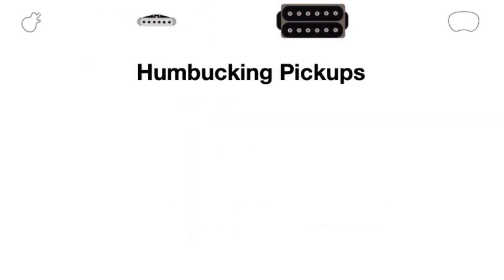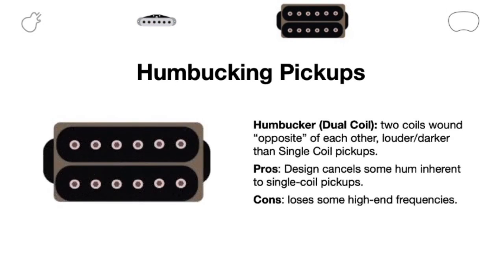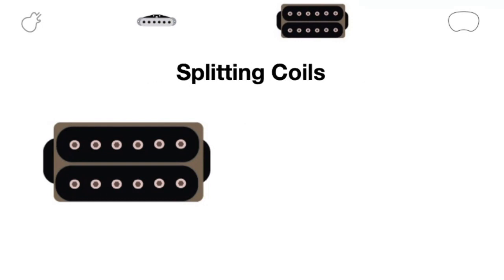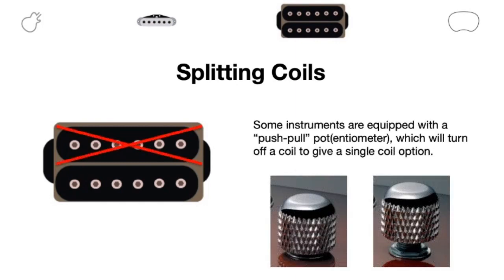So let's move right along and dive into our humbucking examples. What is a humbucker? It's a pickup that features a dual-coiled design — two coils wound opposite of each other — which means you're going to get a louder and darker sound than a single coil pickup. The pros of this design: it cancels some of that hum inherent to single coil pickups, hence the name humbucker. You do lose some high-end frequencies, but that's just some different tonal options. A lot of humbuckers offer the option of splitting the coil so you can get those single coil type sounds. The guitar I'm using today has a humbucker in the bridge, and I can use the push-pull pot on the tone knob to turn off a coil — that's how we were able to nail all those single coil examples earlier.